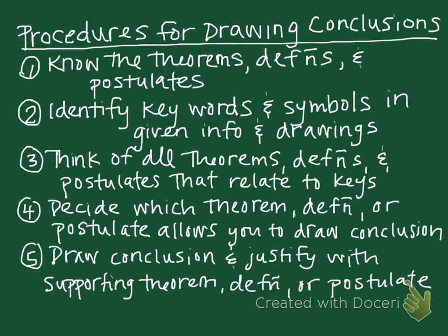Number four, then you're going to decide which theorem, definition, or postulate will allow you to draw some sort of conclusion. And then step five, you will draw your conclusion and justify with a supporting theorem, definition, or postulate, either in a two-column proof or in a paragraph proof.